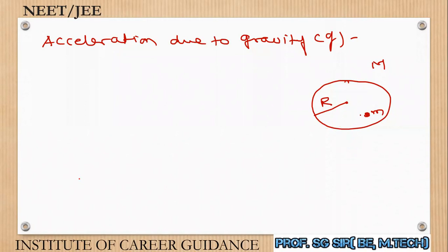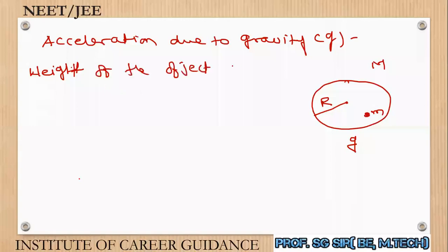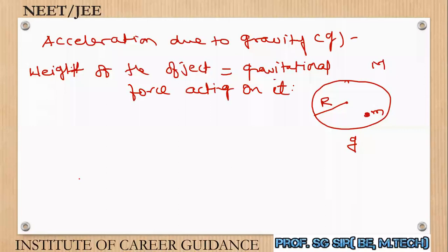Weight of the object — what does it mean? The weight of any object means the gravitational force acting on it. So the weight of the object means mg. The object present on the surface of Earth has mass m and acceleration due to gravity g, so m into g is the weight of that particular object — the gravitational force acting on it.